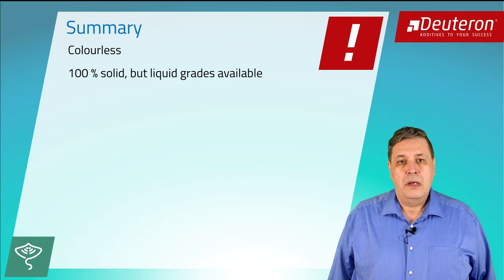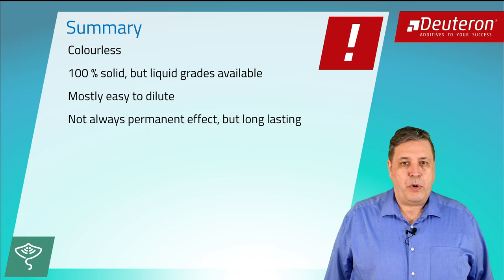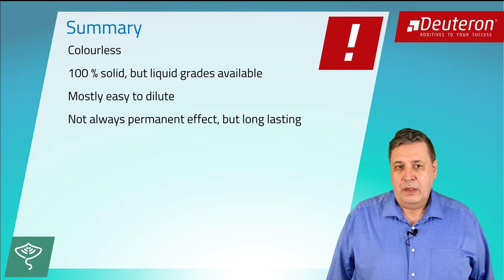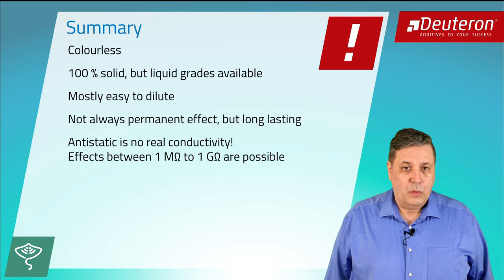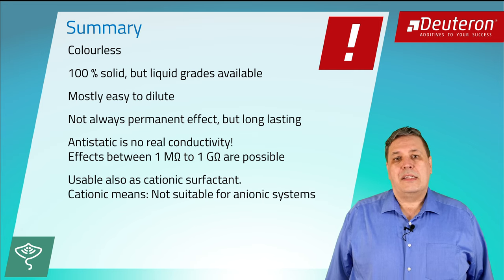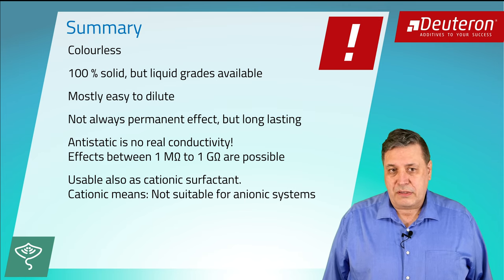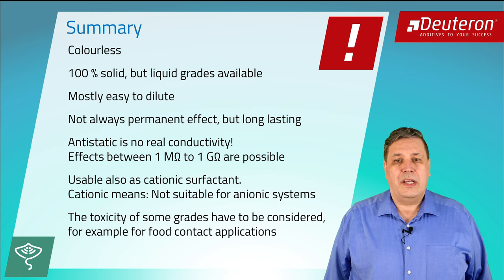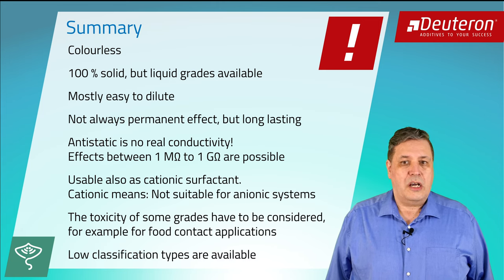Now we are nearly finished with this tutorial. I will quickly summarize the properties and benefits of our anti-static agents. They are colorless. 100% but liquid types available. Mostly easy to dilute. Not always permanent effect, but long-lasting. No real conductivity. Electrostatic effects between 1 megaohm to 1 gigaohm are possible. Usable also as cationic surfactant. Cationic means not suitable for anionic systems. The ecotoxicity of some grades has to be considered, for example for food contact applications. Low classification types are available.